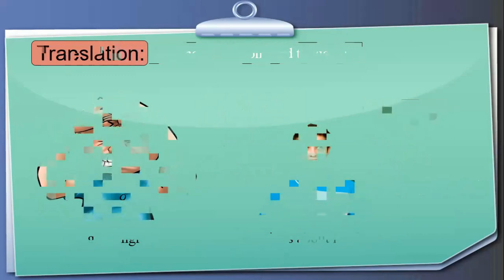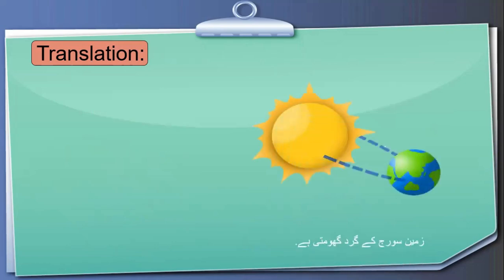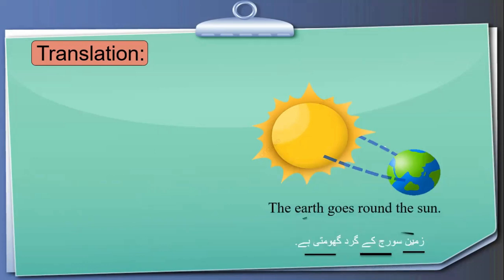Now let's look at translation — this is very essential for exams. Take the Urdu sentence 'Zameen sooraj ke gird ghoomti hai.' When translating from Urdu to English, we must first identify the subject, verb, and object. Here, 'zameen' is the subject and 'ghoomti hai' is the verb. We translate subject first — 'zameen' becomes 'the earth' — then the verb 'ghoomti hai' becomes 'goes,' and then the object 'sooraj ke gird' becomes 'around the sun.' Result: 'The earth goes around the sun.'